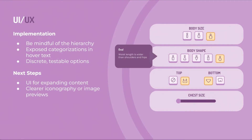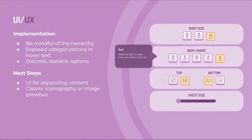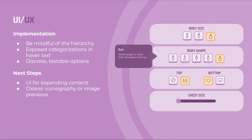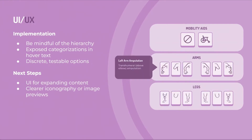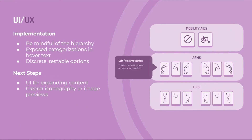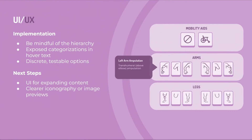For the user interface and experience, I wanted to be mindful of the user hierarchy. We read left to right, top to bottom, so I wanted to center Black and Brown identities when I made certain ordering choices. I also exposed the categorizations and descriptions I used for each feature through hover text to help educate the player and hold my own rationale accountable. It was also important to maintain discrete options for this prototype to properly test the combinations of features in a manageable and accessible way. Next steps for the UI would be to have menus that can actually handle the expanding content, as well as more intentful iconography, because a lot of this is placeholder.